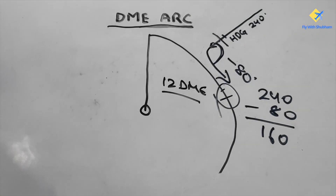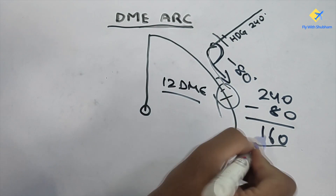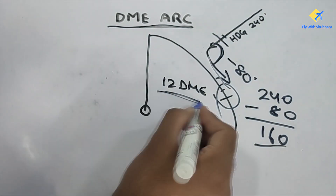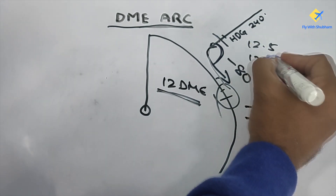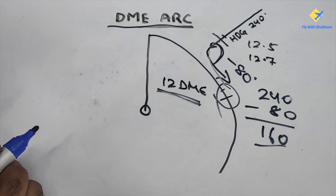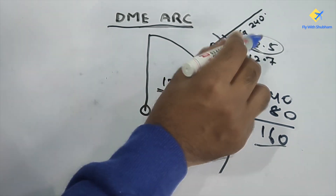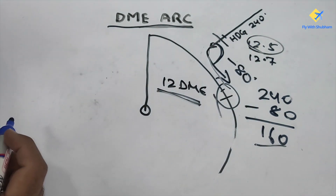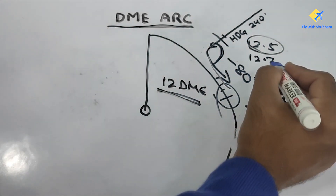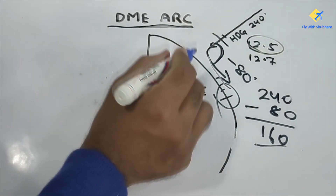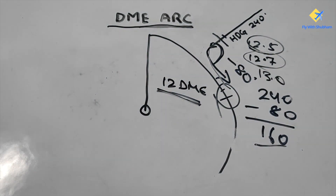One important factor to keep in mind is that when turning to your new heading of 160, the DME distance may not be exactly 12. If this is a 12 DME arc, it can be 12.5 or 12.7 depending on the aircraft type. In a Cessna 172 you will be turning at 12.5, whereas in a faster aircraft such as the DA42 or a larger aircraft, you might turn at 12.7 or even 13 DME as per your aircraft speed.